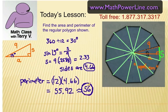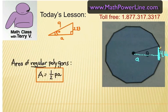Now let's find the area. We know the side is 4.66, and we still need to find the apothem. The formula for the area of any regular polygon is one-half times the perimeter times the apothem — that's why we need to find the apothem distance.